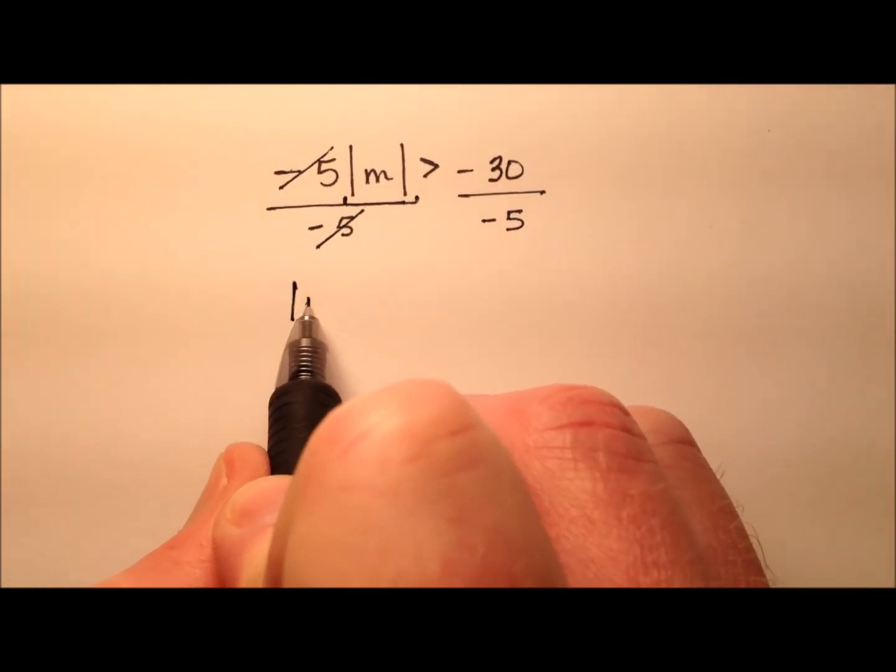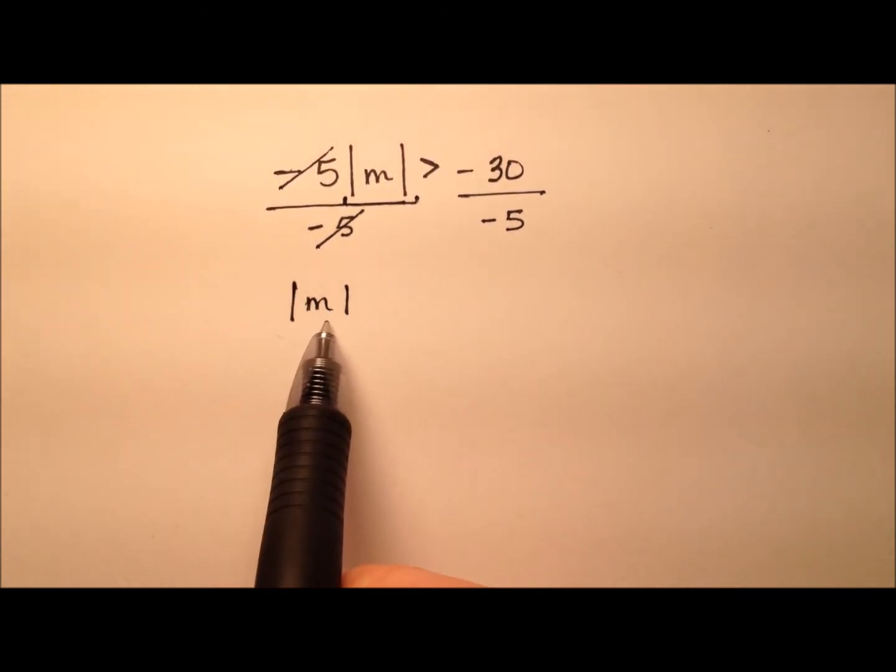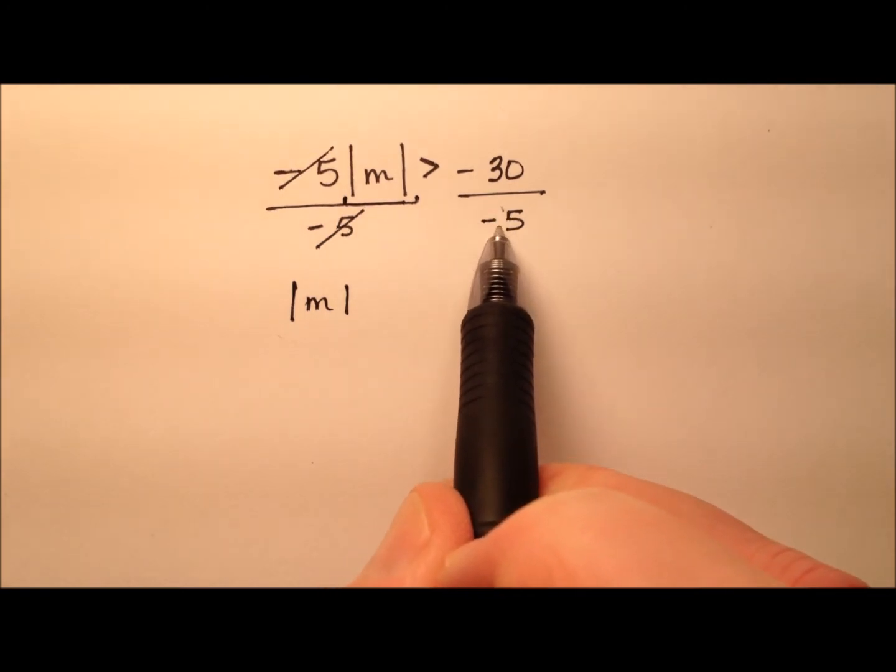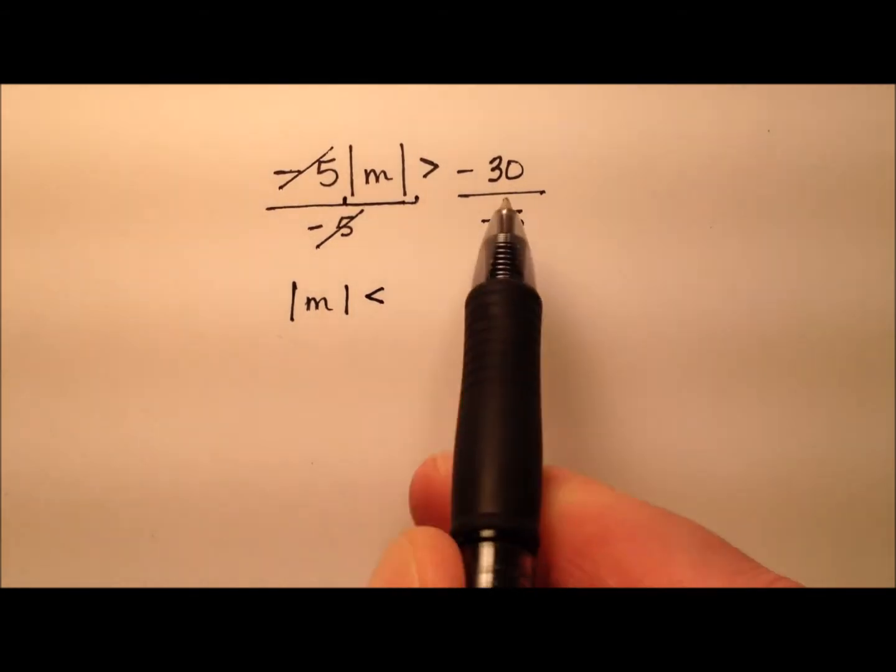When I do that, I see that my absolute value is indeed isolated all by itself on this left side. But I also notice I've divided by a negative. And when I multiply or divide an inequality by a negative, I need to flip the sign of the inequality around.